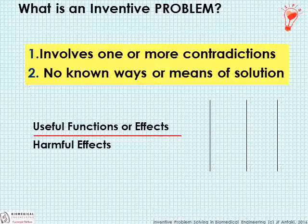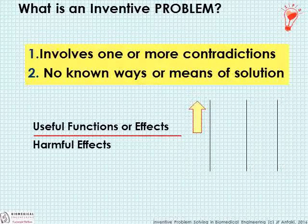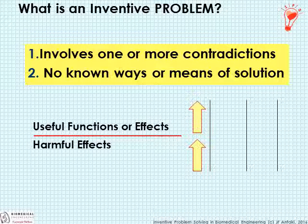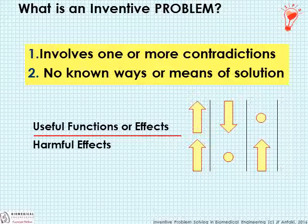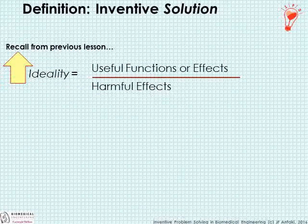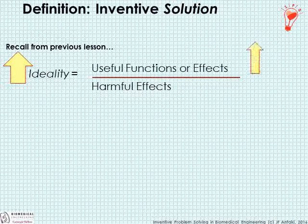In terms of ideality, we have useful functions or effects in the system and harmful effects. A contradiction occurs when, in order to improve the useful function — in this case, getting the wire through the hole — it creates an unwanted or harmful effect, making the hole larger. Or alternatively, a situation in which the useful function is diminished and the harmful effect remains, or harmful effects emerge not compensated by any counteracting useful function. Inventive problem solving is defined as a procedure in which we improve ideality, either by improving the useful functions, diminishing the harmful functions, or both.